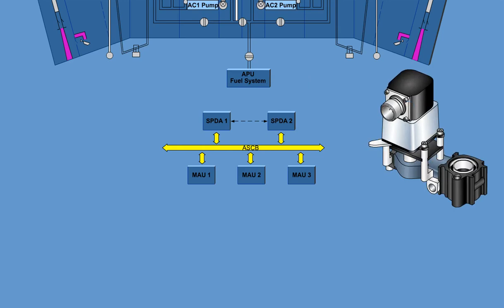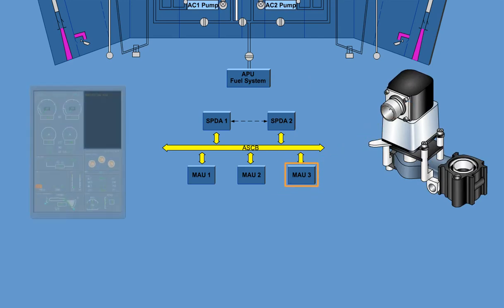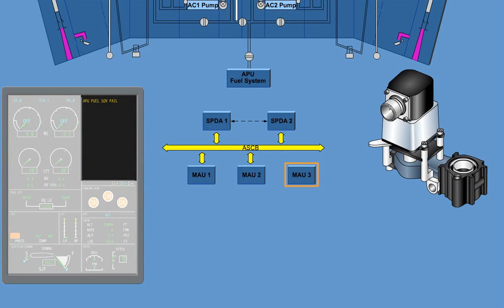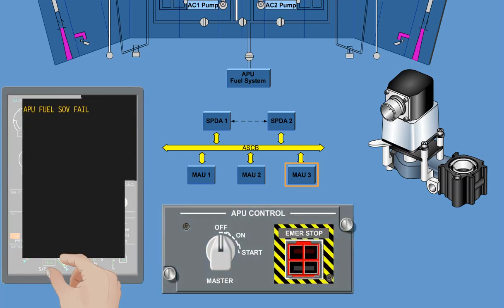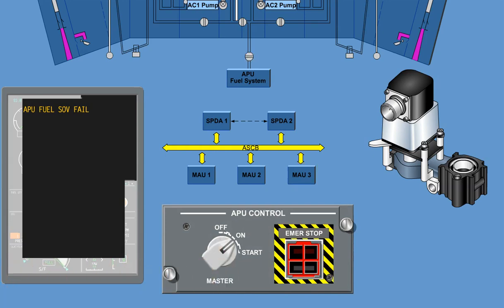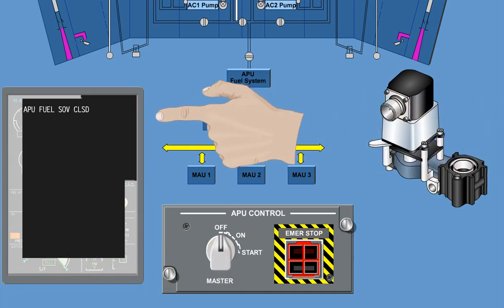Indication switches in the APU shut-off valve provide feedback regarding valve position. MAU number 3 monitors the status of the switches and transmits the data on the ASCB for ICUS display. The ICUS caution message APU shut-off valve fail indicates the APU shut-off valve is not operating properly. The ICUS message APU shut-off valve closed will be displayed for 10 seconds following normal closure to confirm valve position. After 10 seconds, the message APU shut-off valve closed will no longer be displayed.